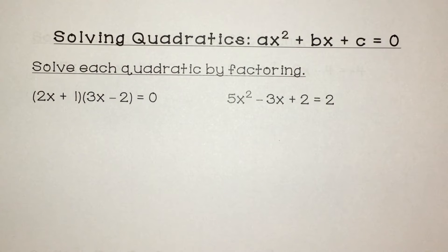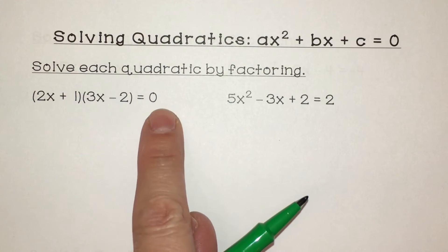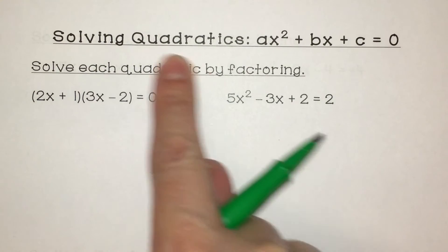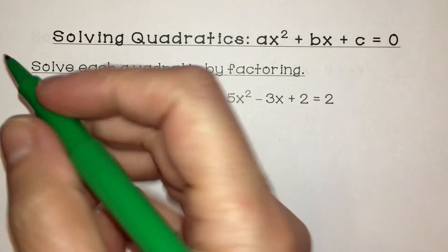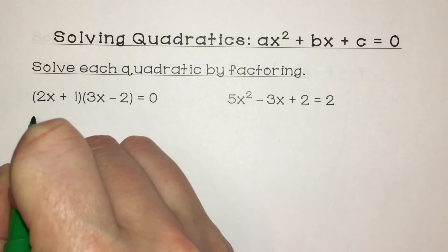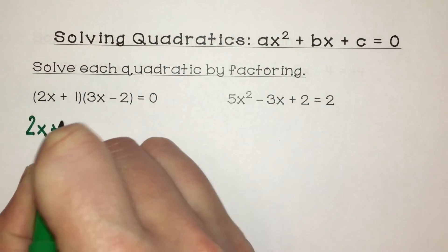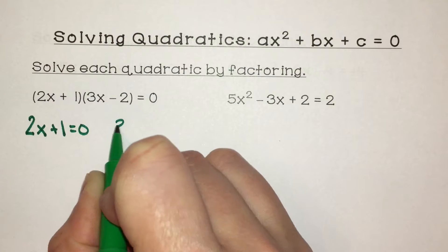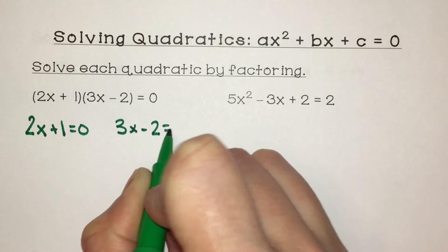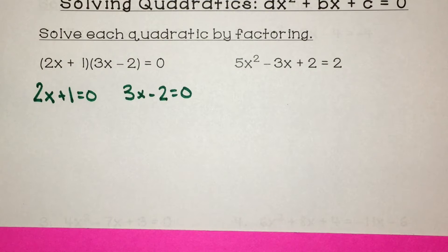This one is started. To solve, we have to set each parenthesis individually equal to zero. You always want it to be equal to zero on the right side. So to figure out what our values of x are equal to, we have 2x plus 1 equals zero, and also 3x minus 2 equals zero. We need to solve each individually for x.